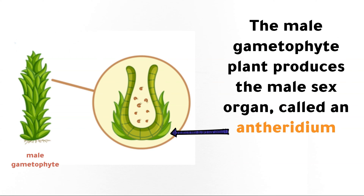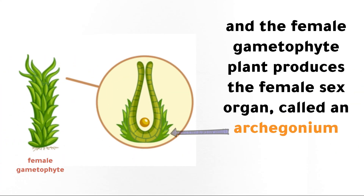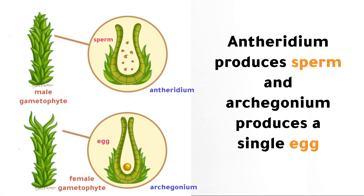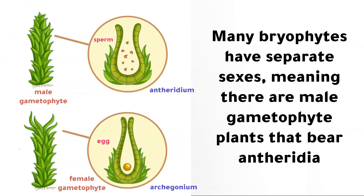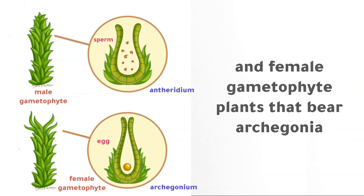The male gametophyte plant produces the male sex organ called an antheridium, and the female gametophyte plant produces the female sex organ called an archegonium. The antheridium produces sperm and the archegonium produces a single egg. These sex cells — the sperm and egg — are called gametes. Many bryophytes have separate sexes, meaning there are male gametophyte plants that bear antheridia and female gametophyte plants that bear archegonia.